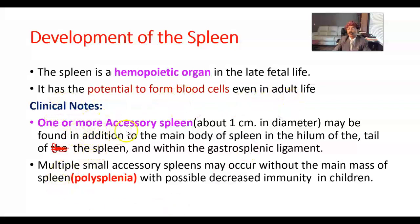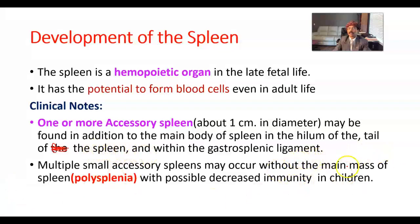Clinical notes: one or more accessory spleens of about one centimeter may be found in addition to the main body of the spleen, at the hilum of the spleen or the tail of the spleen, within the gastrosplenic ligament. Multiple small accessory spleens may also occur without the main mass of spleen — we call this polysplenia.